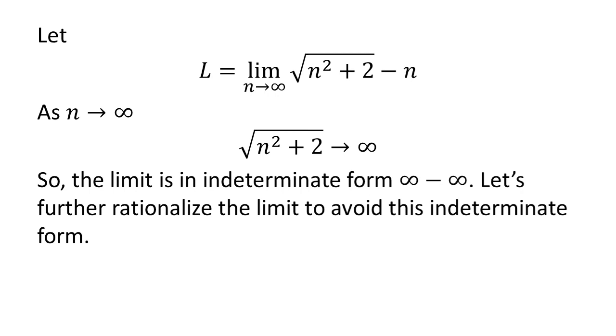As n approaches infinity, square root of n squared plus 2 also approaches infinity. So we can see that the limit L is in indeterminate form infinity minus infinity. Let us further rationalize the limit to avoid this indeterminate form.